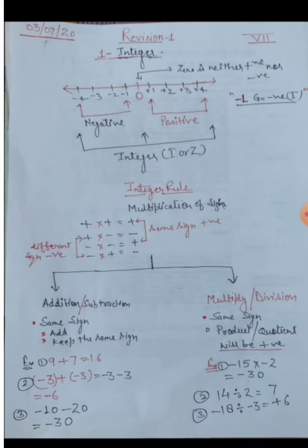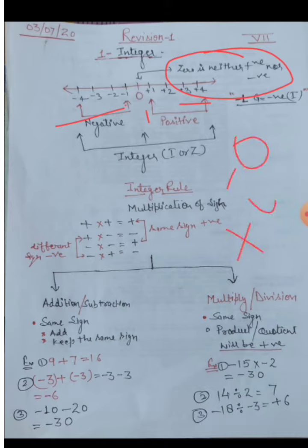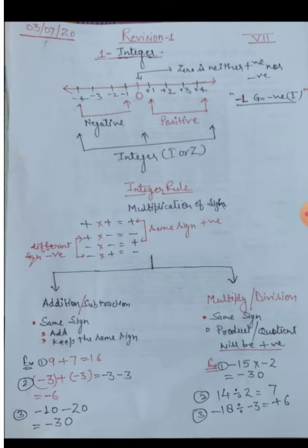An important point: zero is neither positive nor negative. You cannot write minus zero or plus zero — that is wrong. Zero means only zero, written without any sign. Zero is neither positive nor negative. We denote the set of integers by capital I or capital Z.